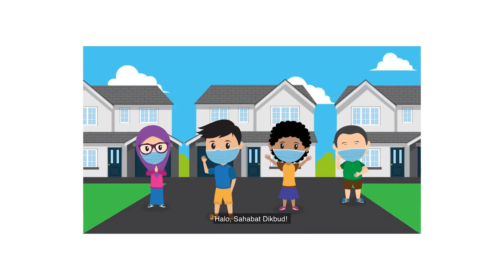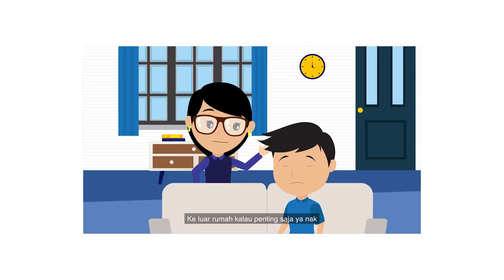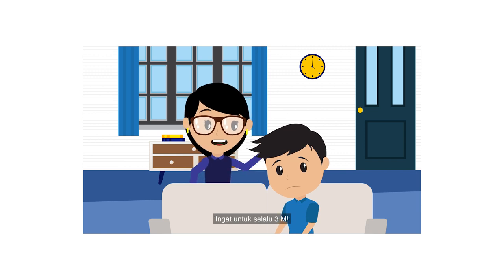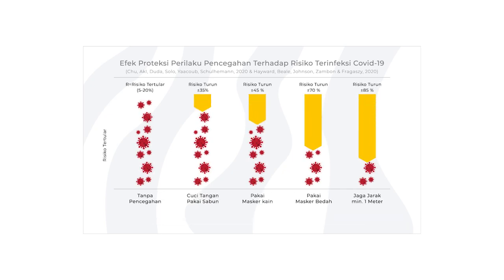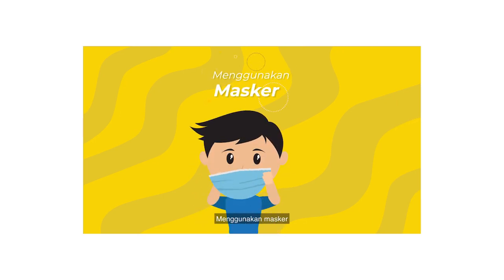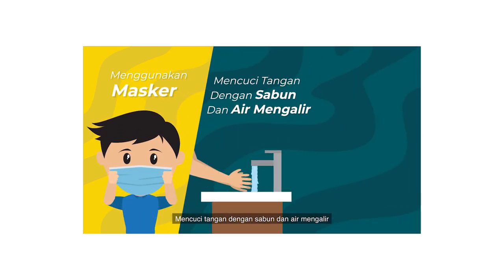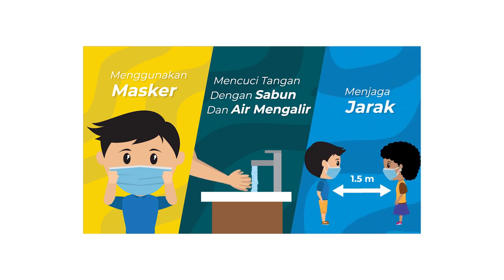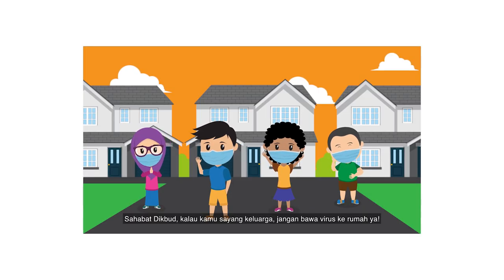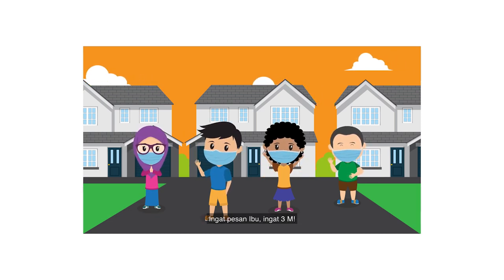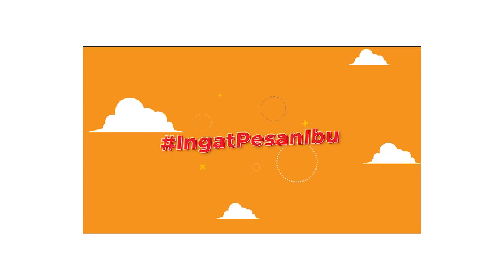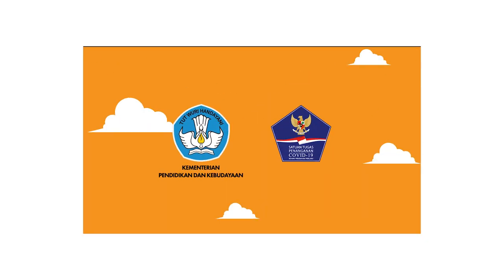Halo, sahabat dikbud. Di masa kebiasaan baru seperti sekarang ini, ingat selalu pesan ibu. Keluar rumah kalau penting saja ya, nak. Ingat untuk selalu 3M. 3M itu mudah dilakukan dan bisa mencegah penyebaran virus corona: menggunakan masker, mencuci tangan dengan sabun dan air mengalir, menjaga jarak. Sahabat dikbud, kalau kamu sayang keluarga, jangan bawa virus ke rumah ya. Ingat pesan ibu, ingat 3M. Terima kasih telah menonton!